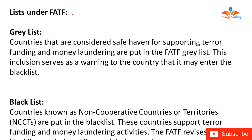According to the activities of countries with respect to money laundering and terrorist financing, countries across the globe are listed under two lists of the FATF. These are the grey list and the black list.